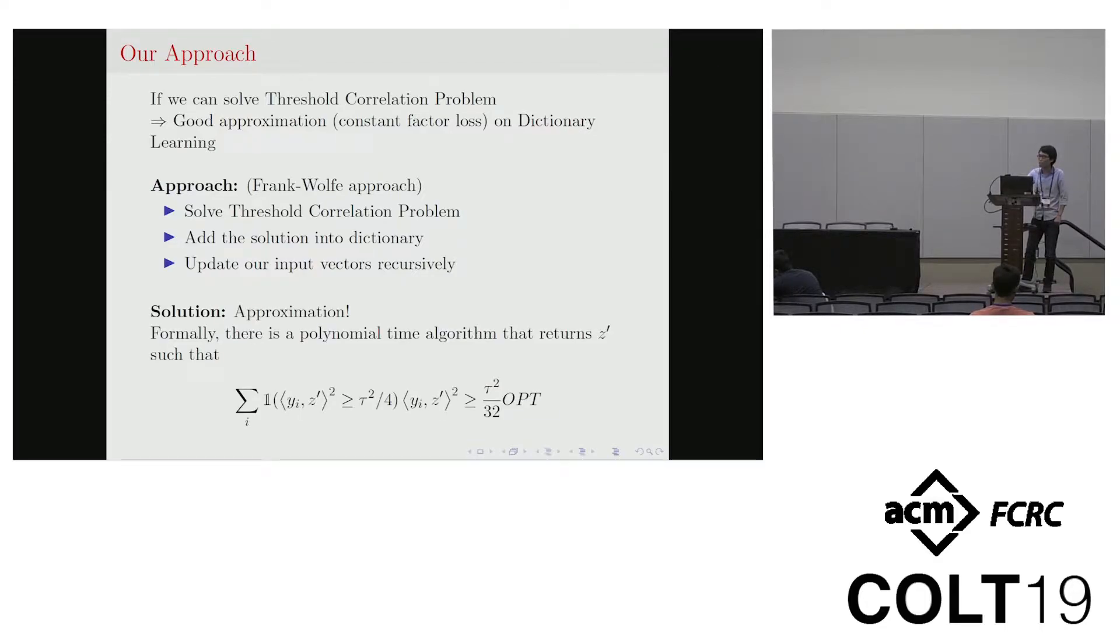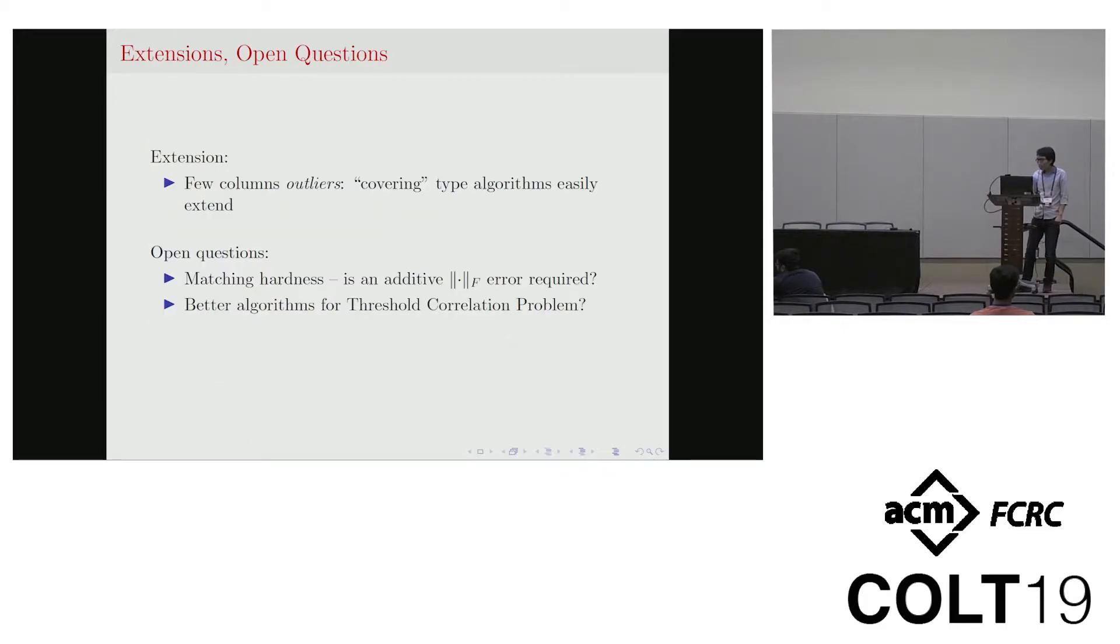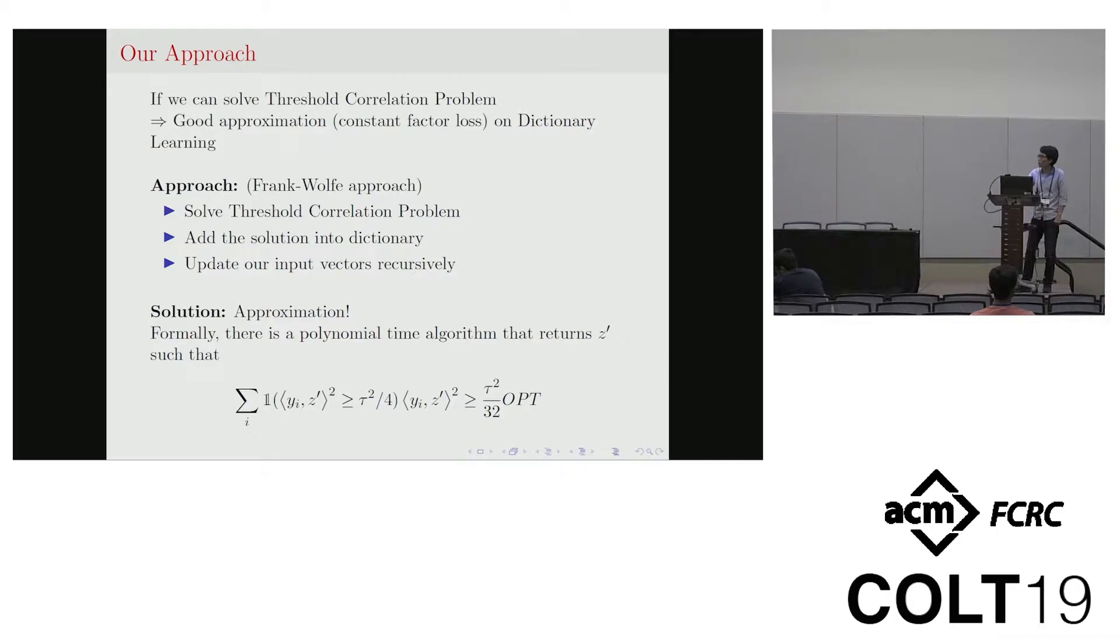Then the solution here is we can approximate it. So more precisely, we can design a polynomial time algorithm such that we return a vector c prime with the following guarantee. So you can see that there are some relaxation on the threshold tau squared as opposed to tau, and we also have the approximation ratio on our objective value which is tau squared divided by 32. So once we solve this problem, once we plug in this approximation algorithm into our main algorithm, then we can get our main result.